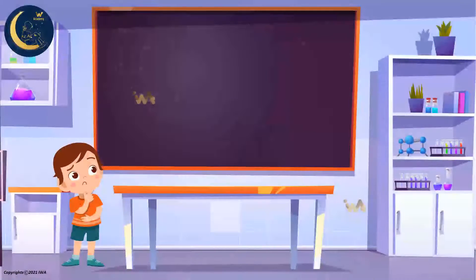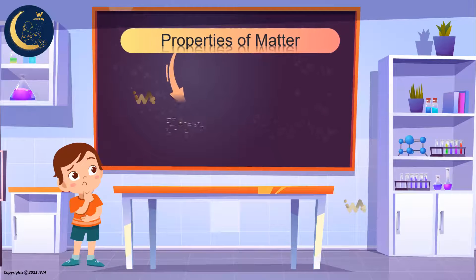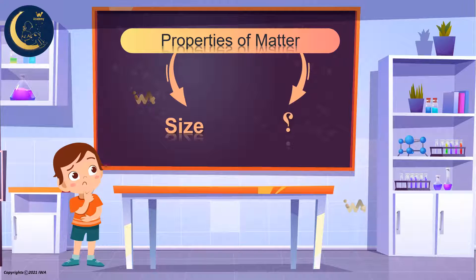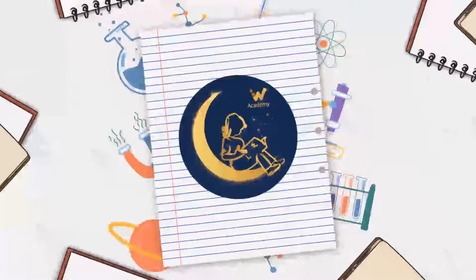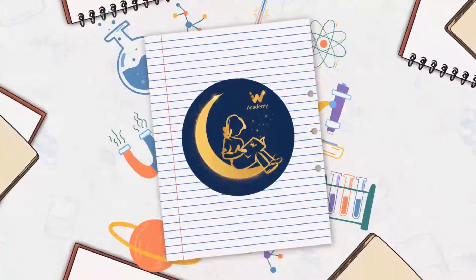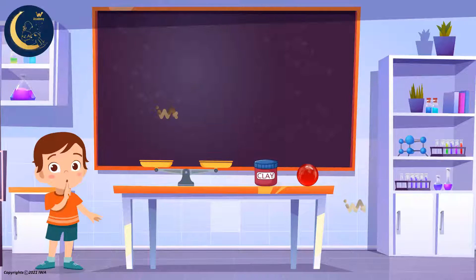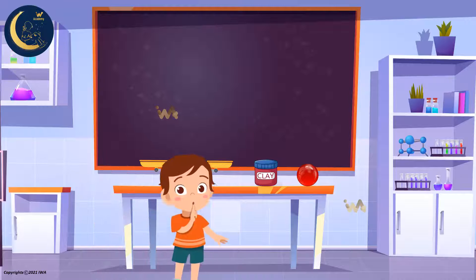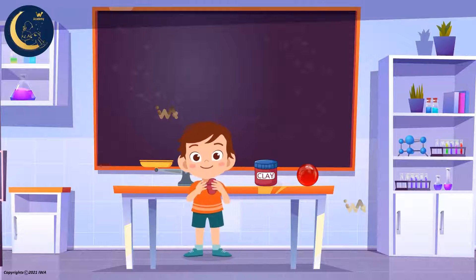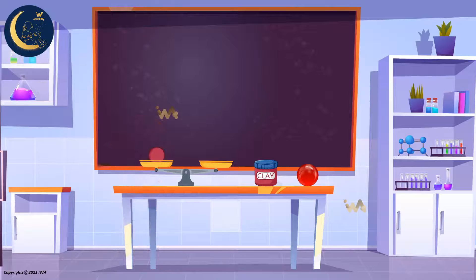So, my friends, the first property of matter is size. Now let us learn about the second property together. We'll need a balanced scale, a glass ball, and clay. I'll take some clay and mold it into a ball and place it on one side of the scale, and on the other side I will place the glass ball.